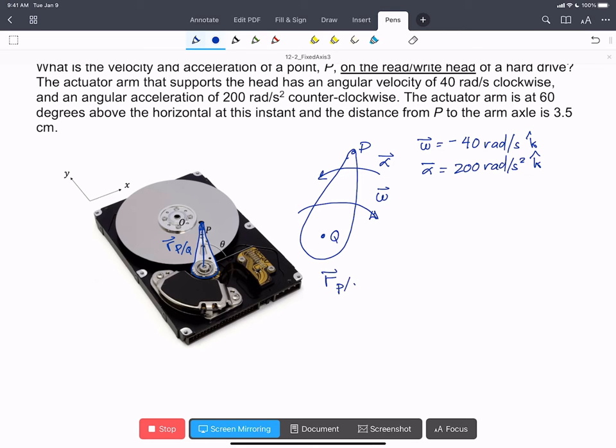R P with respect to Q is, we're told it's 3.5 centimeters from the axle Q to P, 0.035, and we have cos 60 in the I hat plus sine 60 in the J hat meters.